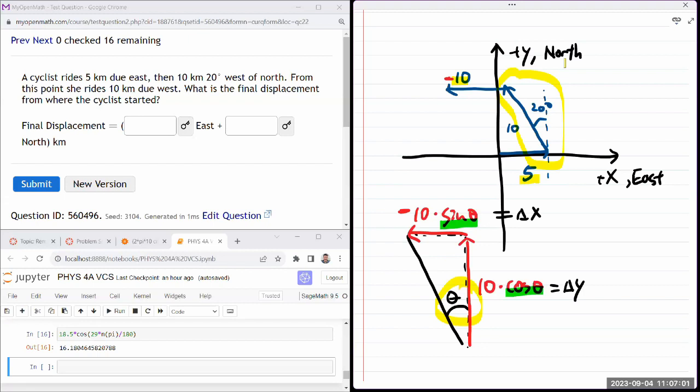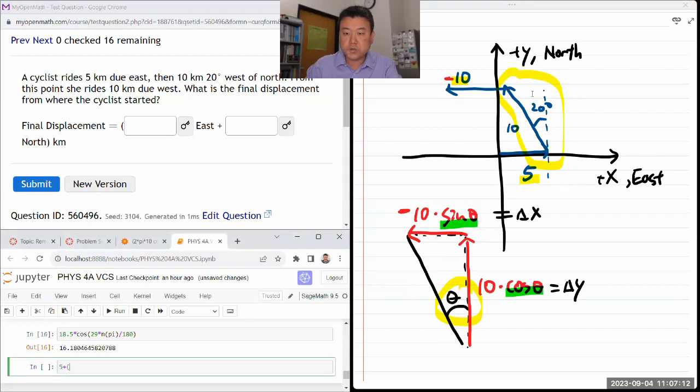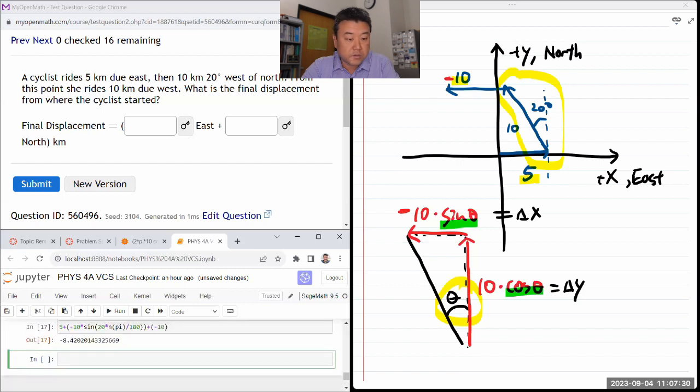So I think I can do the rest of the calculation just in the calculator. So for the x or eastern component, I'm adding these three contributions, five plus the contribution from here. So that will be minus 10 times the sine of the angle 20 converted to radians, pi divided by 180, plus the final contribution minus 10. So that will give me my x component of contribution, minus 8.42 kilometers. I could probably get away with 8.4, but just to be on the safe side.